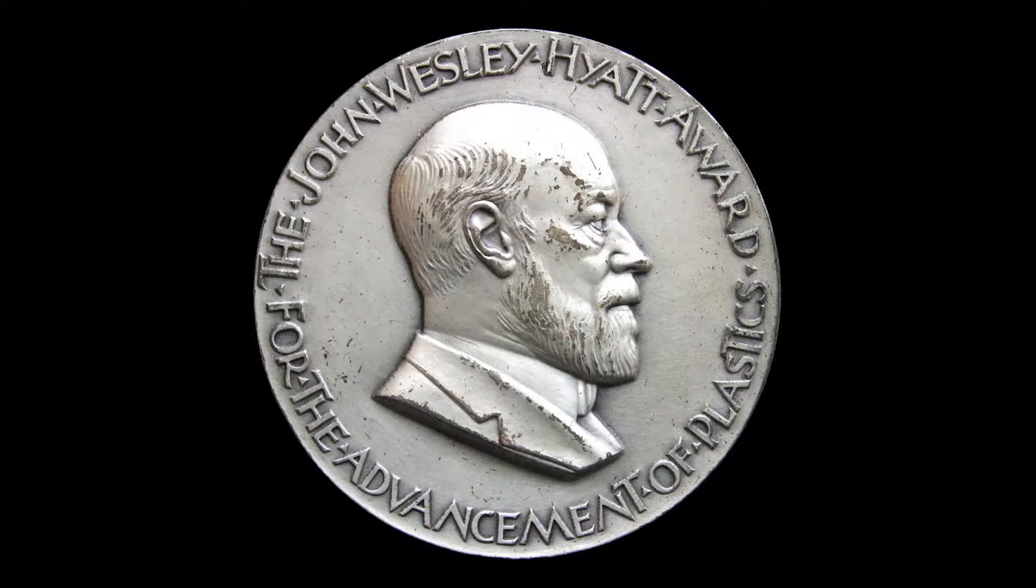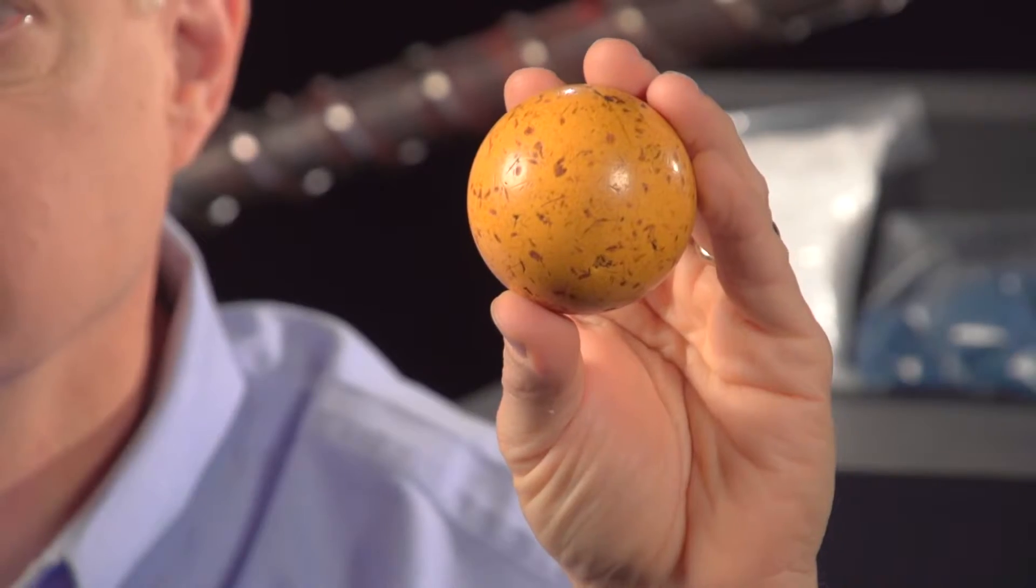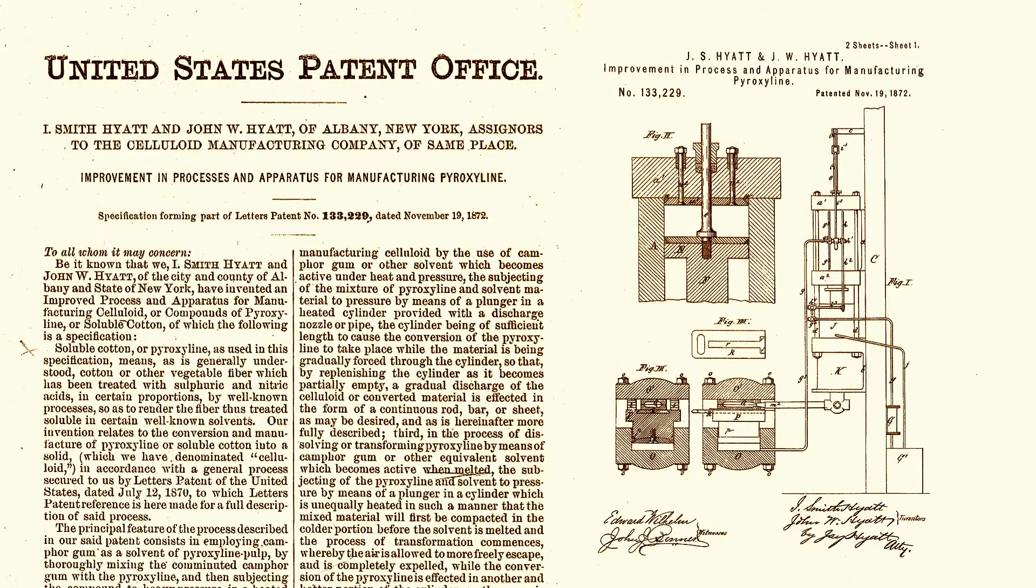This spurred John Wesley Hyatt to develop one of the first plastics, celluloid, to create billiard balls. He patented an apparatus for molding products from celluloid. This apparatus was the birth of plastic injection molding.